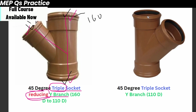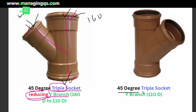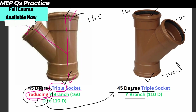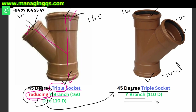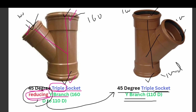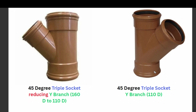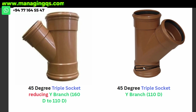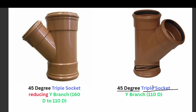The next one is a 45-degree triple socket Y-branch — no reducing term here, because all fixing ways are the same diameter, for example all 100mm. That is why we call it just a triple socket Y-branch with no reducing concept. If there is no third socket, we would call it a 45-degree double socket fitting.